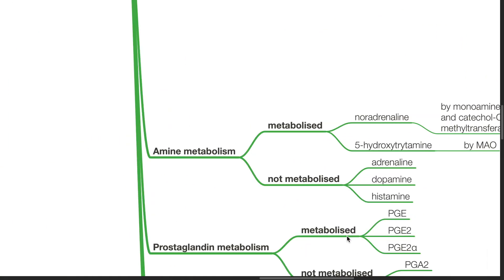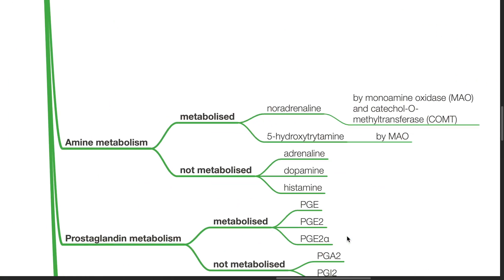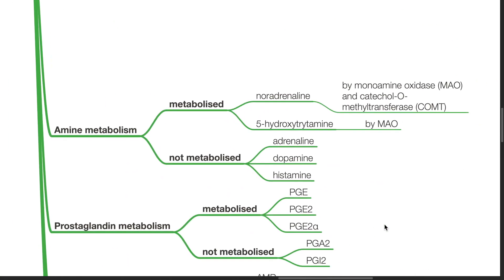The lung is involved in amine metabolism. Noradrenaline is metabolized by monoamine oxidase, MAO, and catechol-O-methyltransferase, COMT. Serotonin is metabolized by MAO. Adrenaline, dopamine and histamine are not metabolized in the lung.